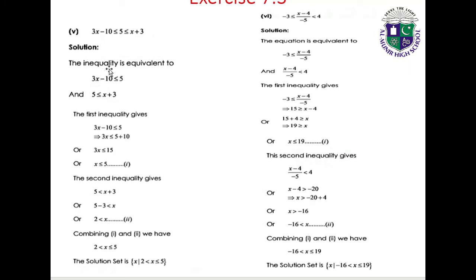Part 5: 3x minus 10 less than or equal to 5 less than or equal to x plus 3. First inequality: 3x minus 10 less than or equal to 5, giving 3x less than or equal to 15, so x less than or equal to 5. Second inequality: 5 less than x plus 3, giving x greater than 2. Combining: 2 less than x less than or equal to 5. Solution set: {x | 2 < x ≤ 5}.